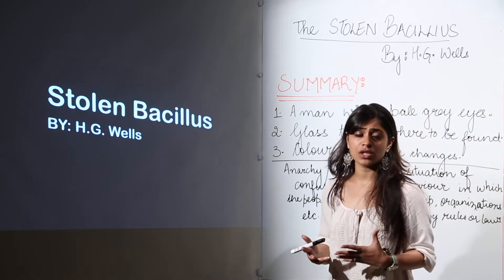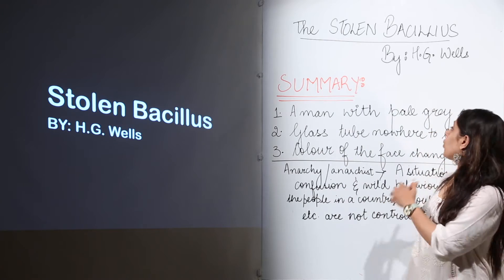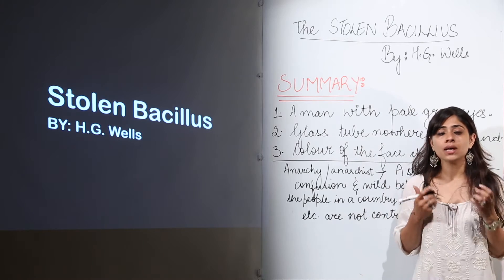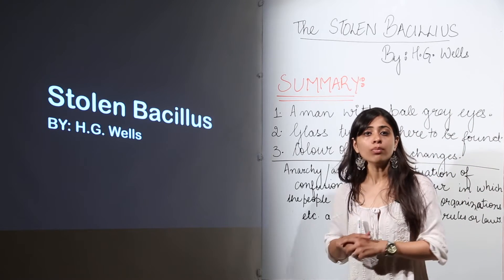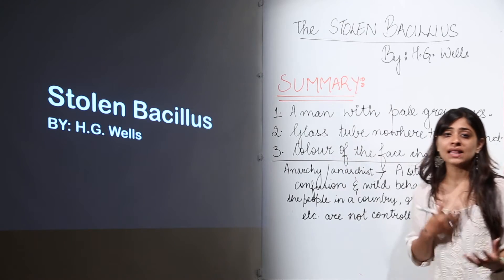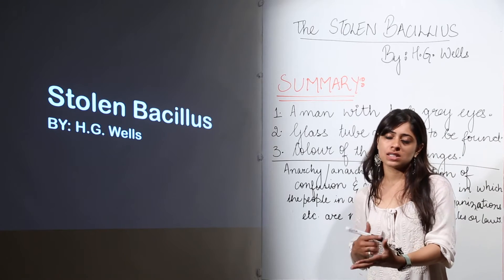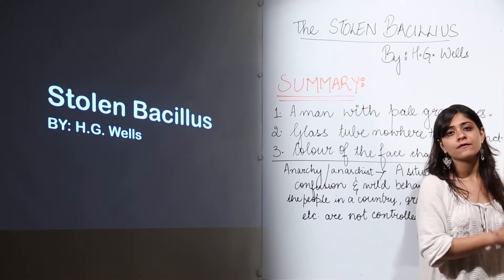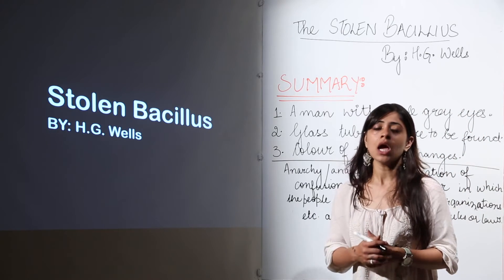After getting all the information from the bacteriologist, the man with pale grey eyes steals the bacillus and the test tube from his laboratory. He then starts moving out into the city and a chase begins. The bacteriologist follows the anarchist, and the bacteriologist's wife follows the bacteriologist — there is a whole chase sequence running through the city of London.